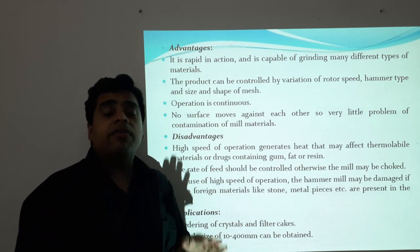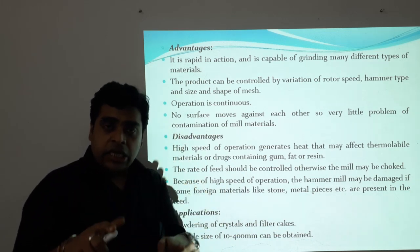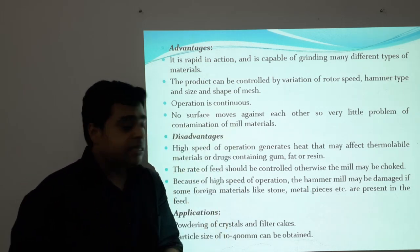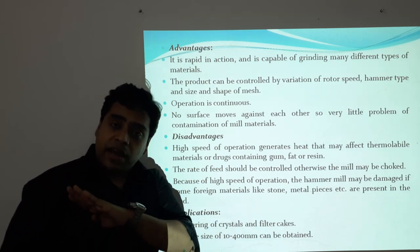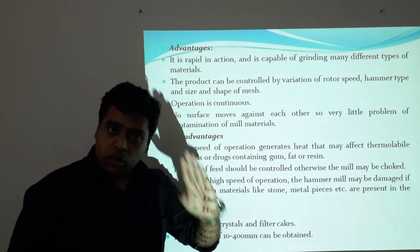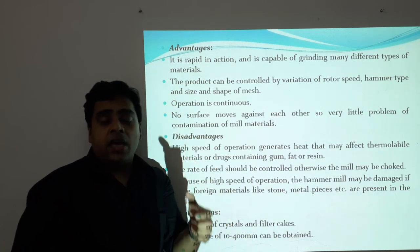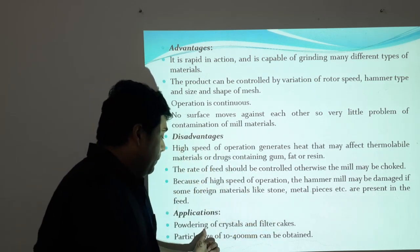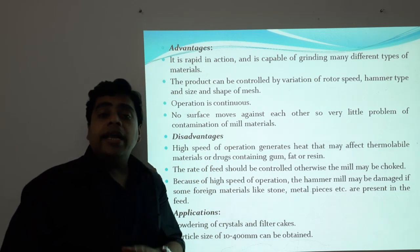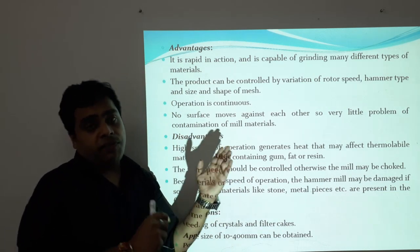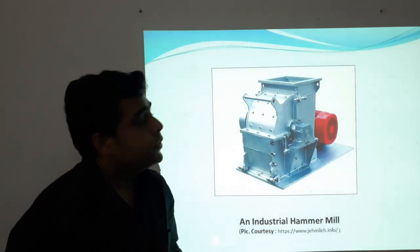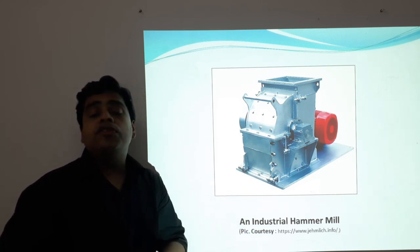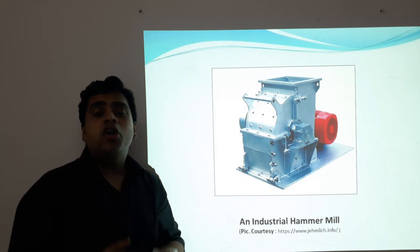One of the applications is powdering of crystals and filter cakes in industry. After crystallization, the solidified crystals accumulate in the mother liquor and solidify into lumps that need to be broken down. After filtration, the solid comes in the form of a cake which is broken down into pieces with the help of hammers. A particle size of around 10 to 400 millimeters can be obtained using hammer mills. This is a typical industrial hammer mill routinely used for size reduction of solid feed.